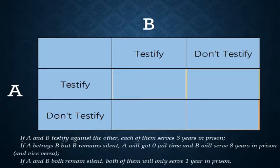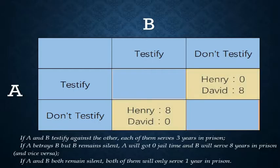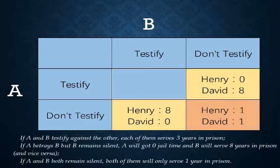A is offered a deal by the police: if he testifies against B for the more serious crime, and B doesn't testify against him, he gets zero jail time, but B gets eight years. B gets the same offer. If neither of them testifies, each person only gets one year in jail. If both of them testify, they each get three years.